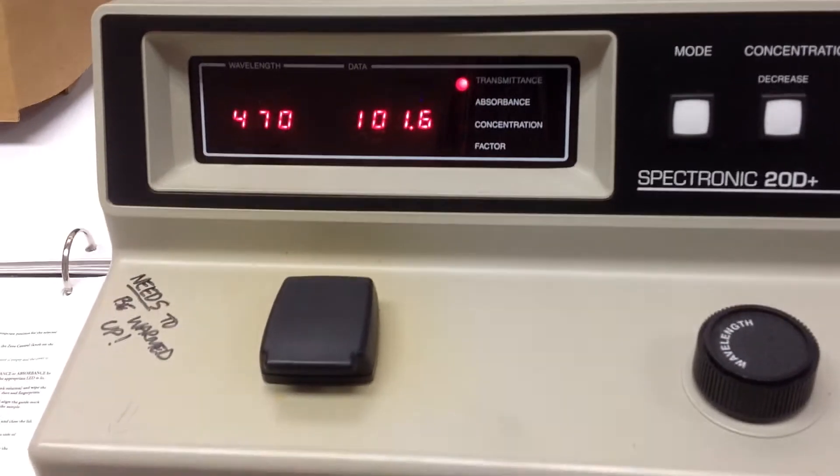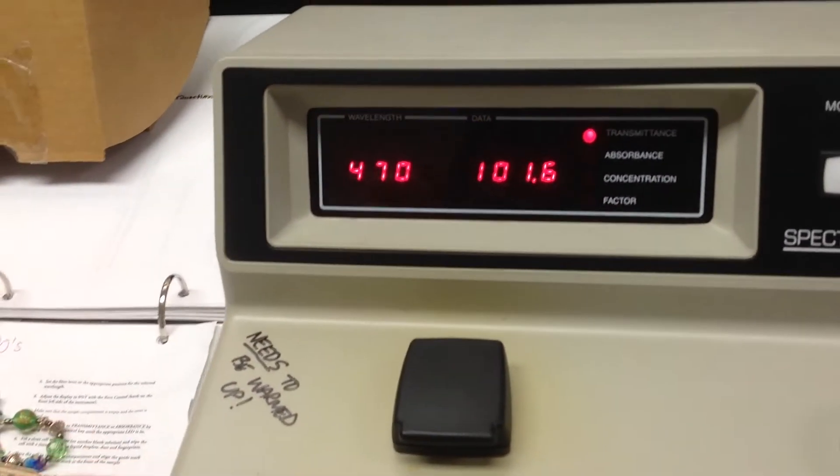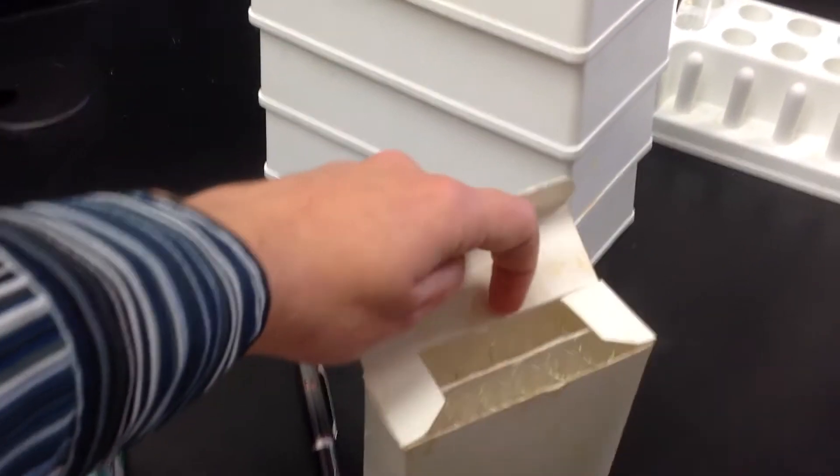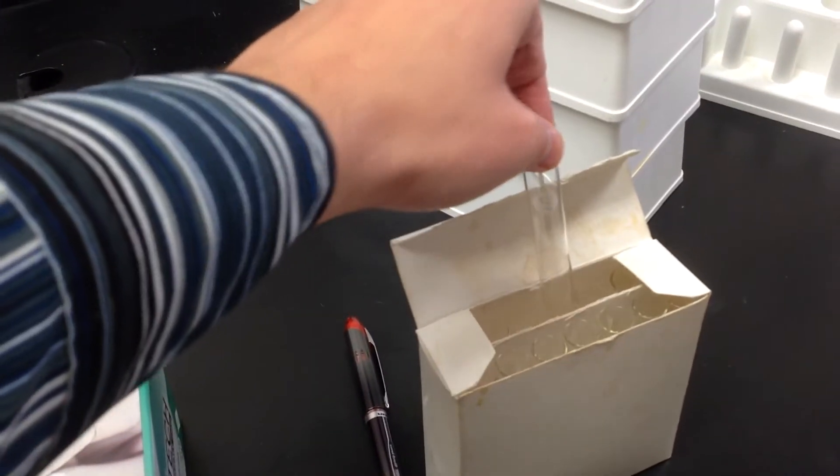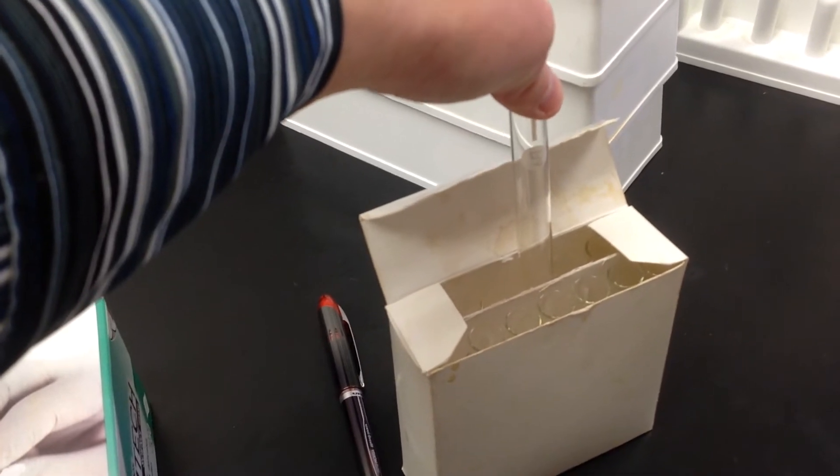Then what you want to do is make sure that it's zeroed out for that wavelength. And so you're going to use what's called a blank. A blank is one of your cuvettes. A cuvette looks like a tiny test tube. They're special test tubes made out of special glass. These are about 20, 25 bucks apiece, so please be really careful with them.